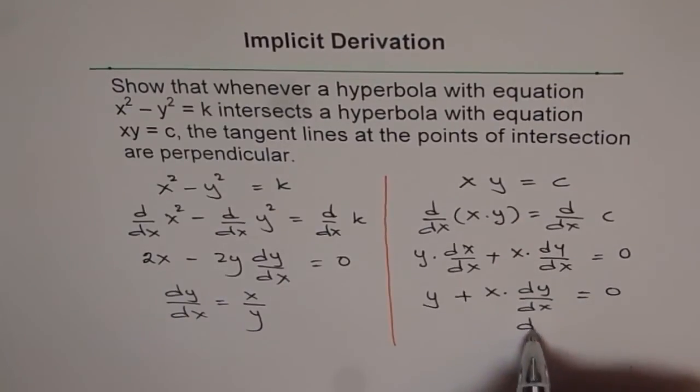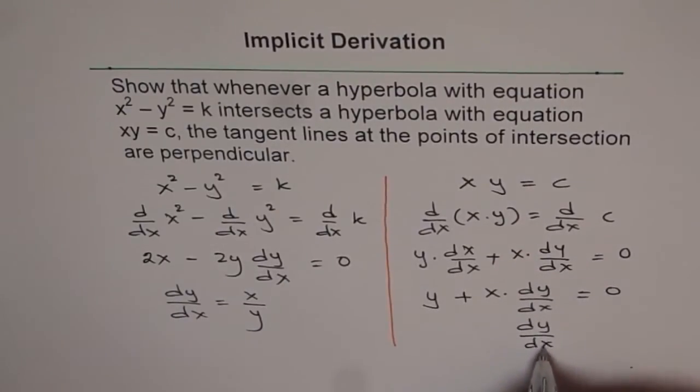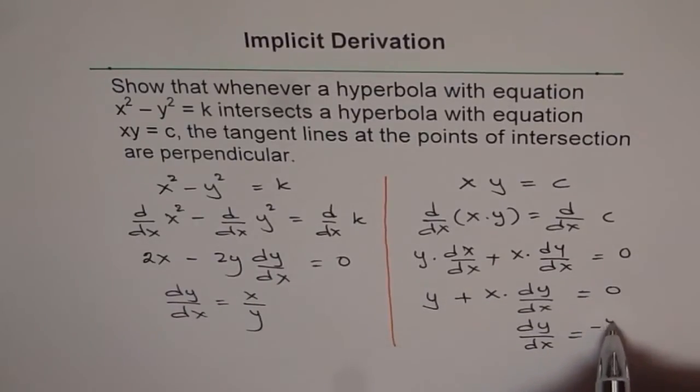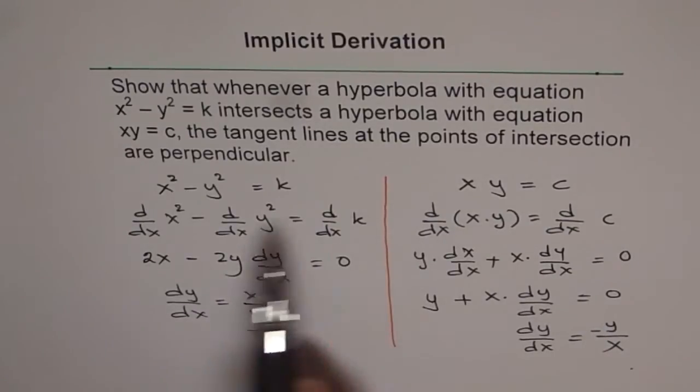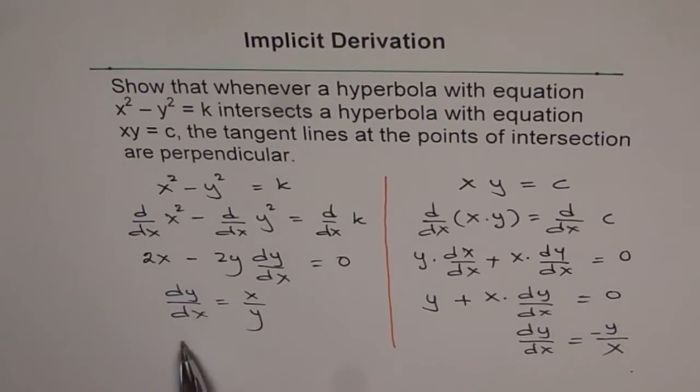And from here, I get dy/dx equals to, I take y on this side, so I get minus y divided by x. So what do I get? So as you can see here, the two different functions and their derivatives are quite interesting. Derivative of this is x over y, and derivative of this function is negative reciprocal of what it was.